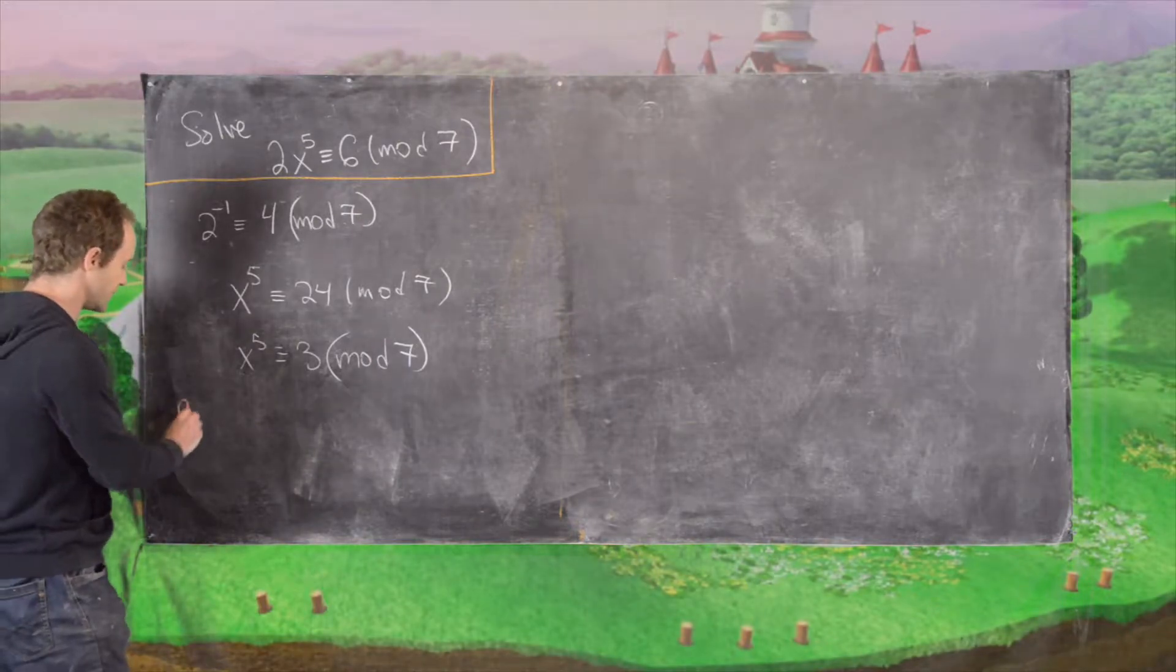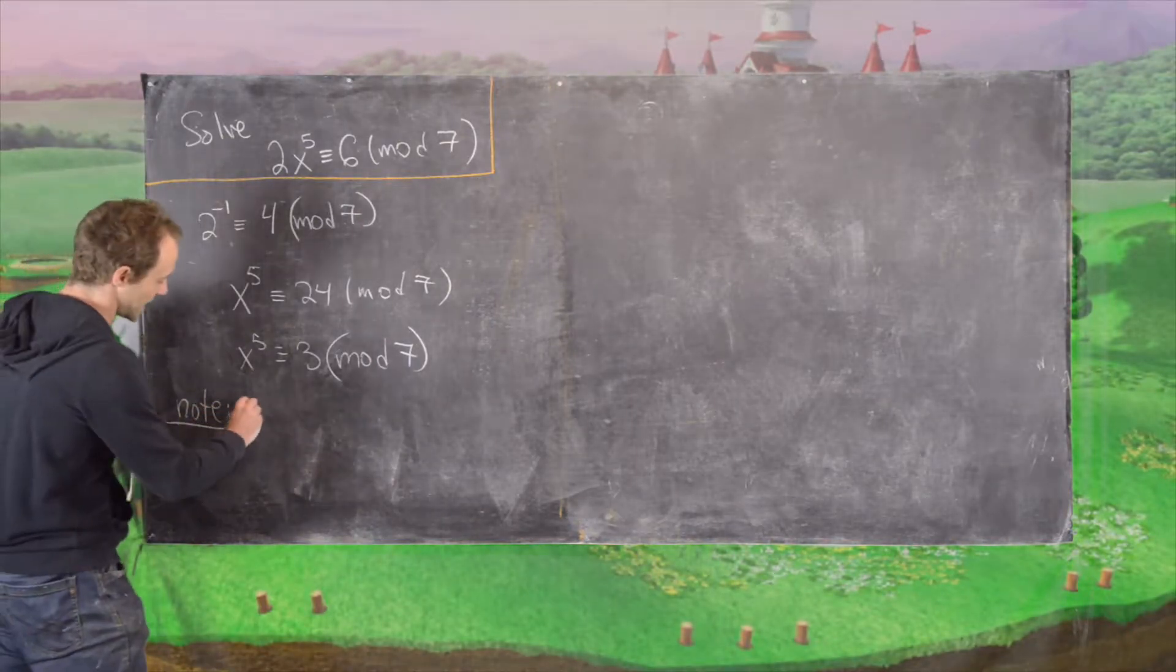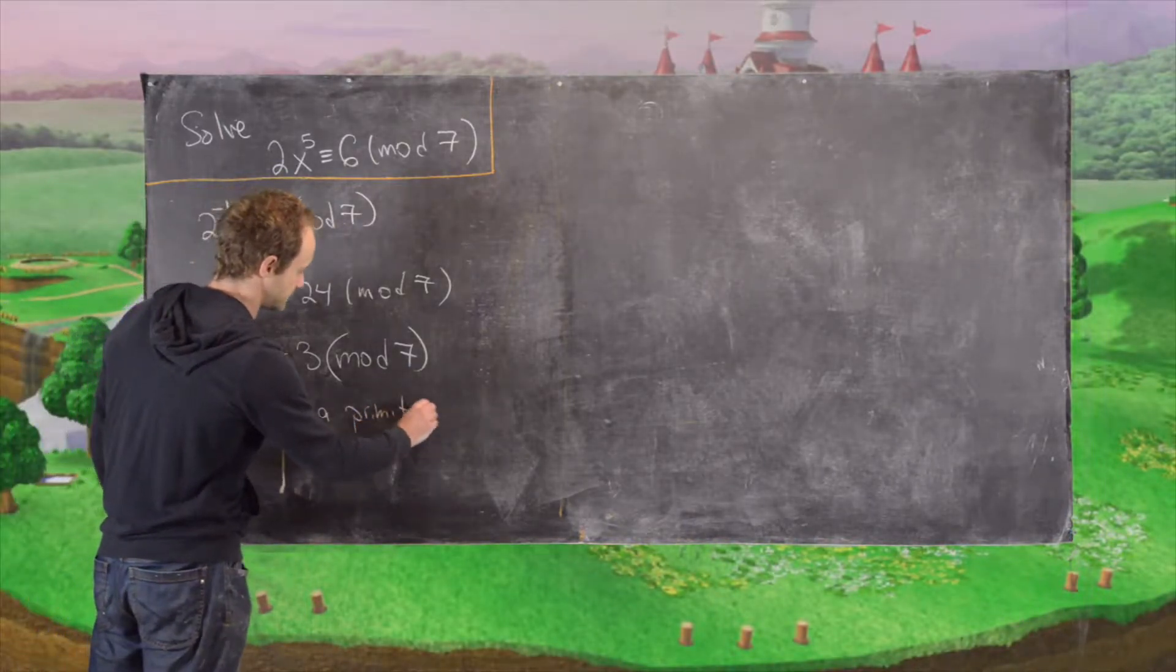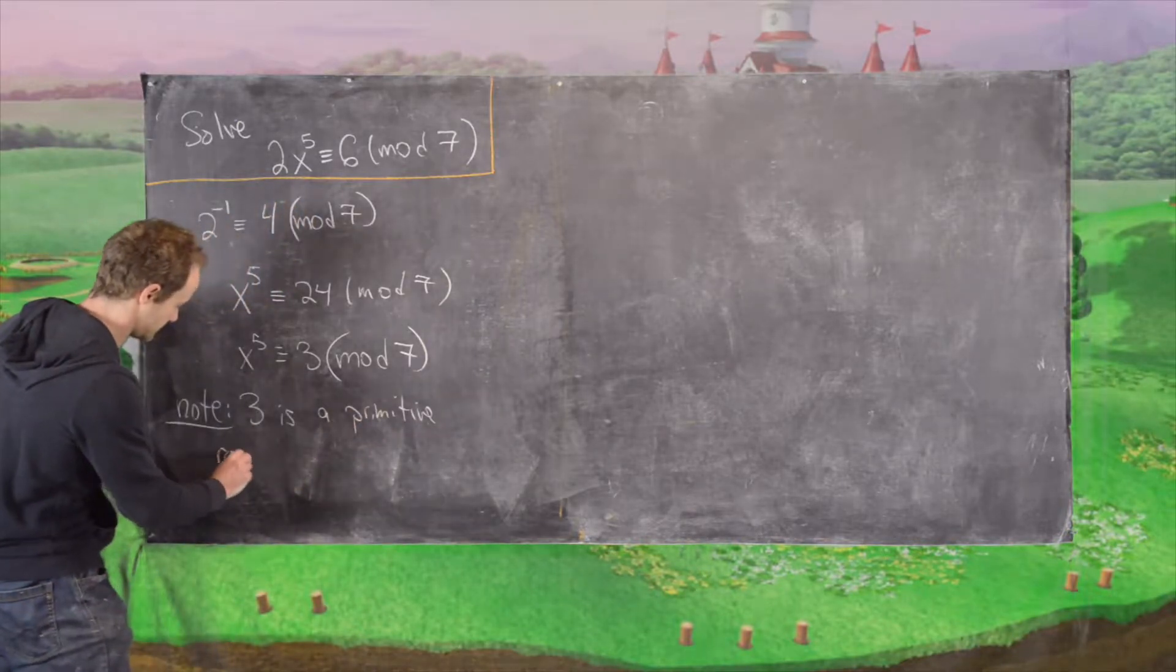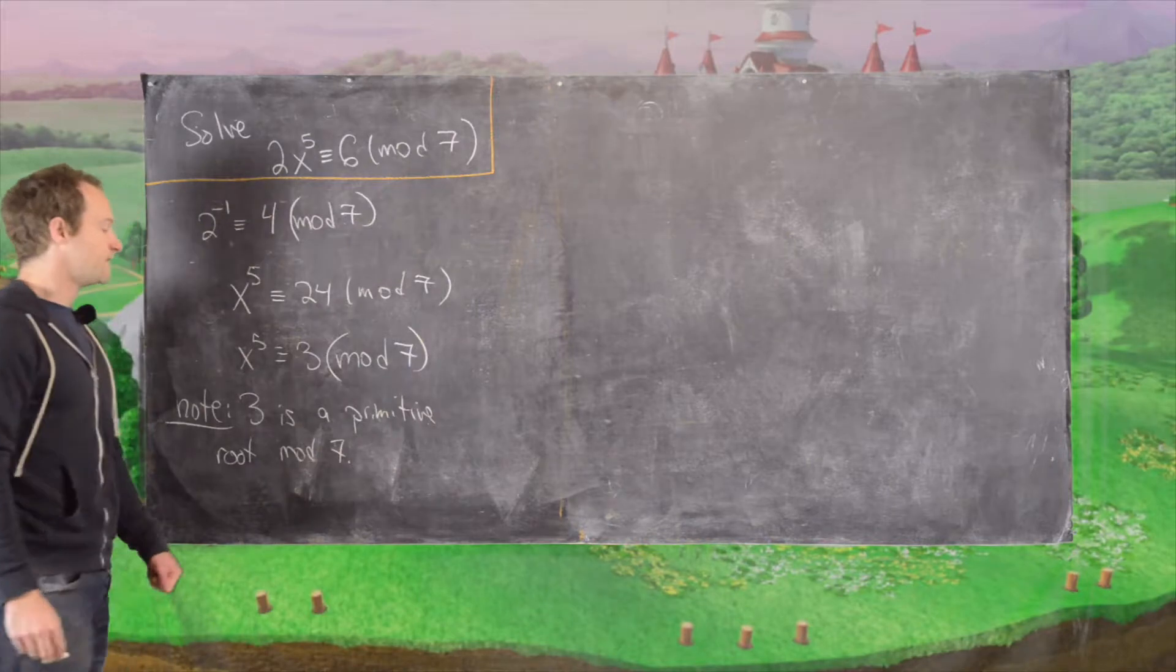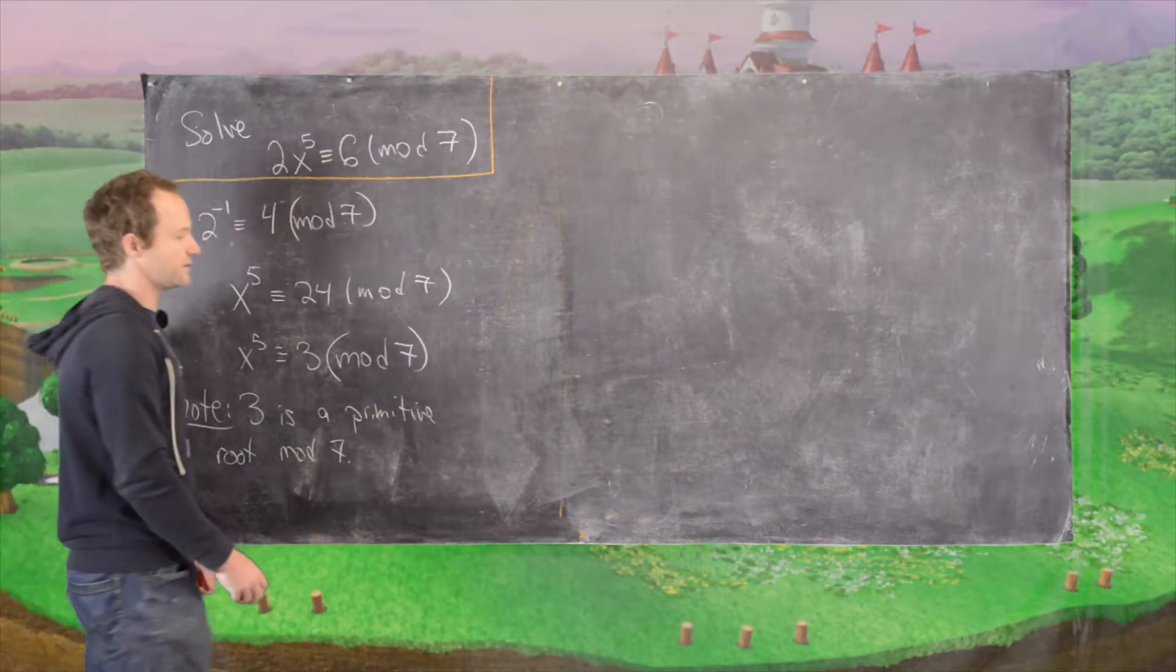And now the next thing that we want to use is the notion of a primitive root. And so let's notice that 3 is a primitive root mod 7. So now what we want to do is rewrite this equation in terms of this primitive root.